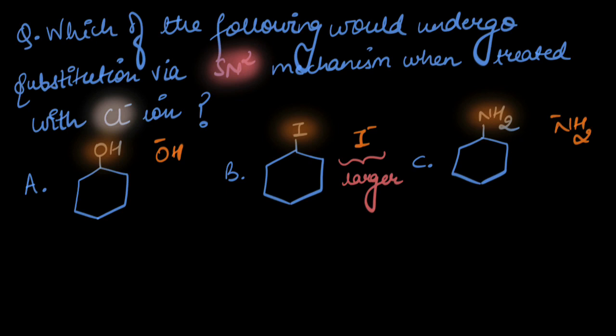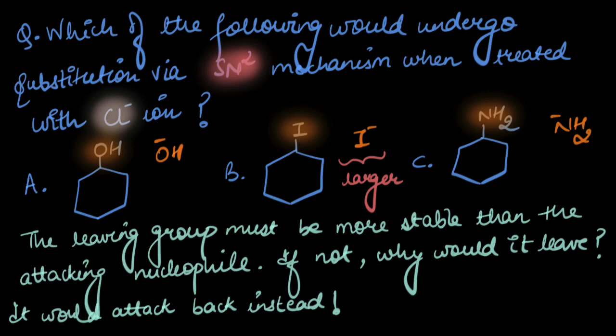Look at the question carefully. They ask us which of the following would actually undergo substitution when treated with Cl⁻ ion. So what we really need to do is compare the stabilities of the attacking nucleophile and the leaving group. If the leaving group is more stable than the attacking nucleophile, why would it leave? Wouldn't it just attack back and make the attacking nucleophile leave instead?